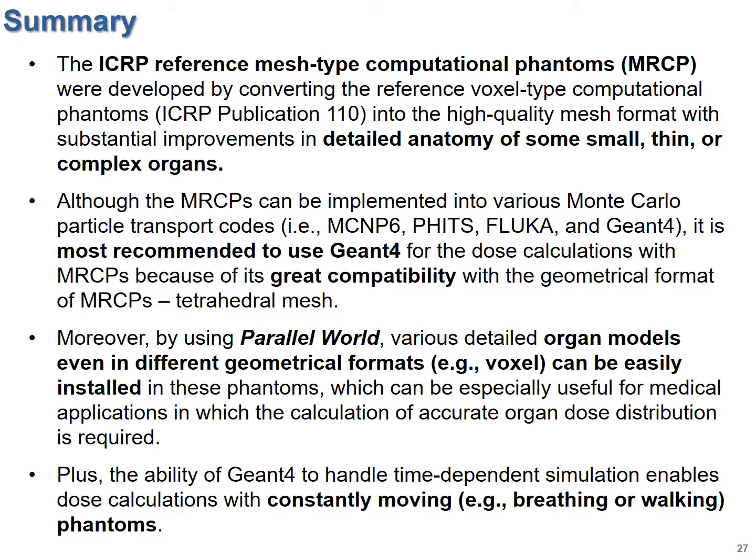In summary, we have developed ICRP mesh type reference phantoms which define even very small or thin organs in detail. For dose calculations with these phantoms, Geant4 is showing the best performance. Moreover, the concept of parallel world is also being of great help to extend the applications of these phantoms by installing various detailed organ models. Plus, by using Geant4 we could also calculate doses for moving phantoms such as breathing or walking phantoms. In overall, these new mesh type phantoms show great performance and their applications are wide, and I could say that this is partly attributed to the features of Geant4.